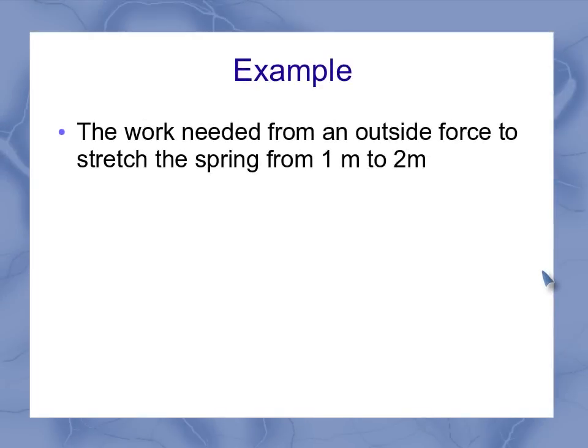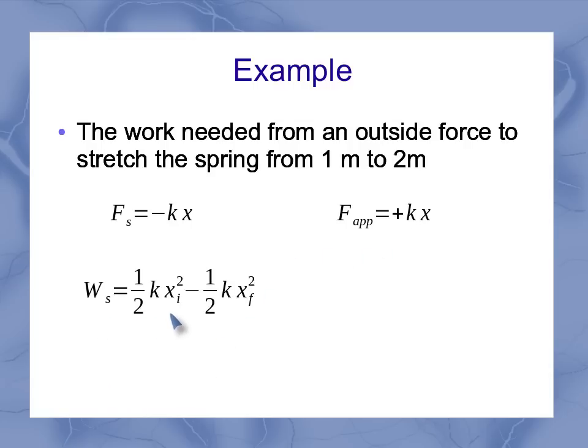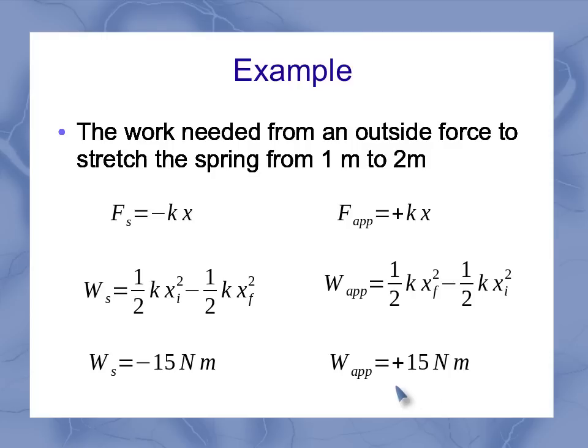So now, let's kind of turn this around a little bit and say, what about the work needed from an outside force to stretch the spring from 1 meter to 2 meters? Well, when I was looking at the force of the spring, that was minus kx. But the force I need to apply to stretch it against that force is going to be positive kx. So while the work done by the spring has x initial and x final in those positions, I get the exact opposite when I'm looking at the work done by an applied force, which is going against the spring force. So while I had a negative 15 newtons per meter done by the spring, I'd have a positive 15 newtons per meter done by the applied force. I have to add energy in the system to stretch that spring out. The spring at the same time is trying to take energy out.